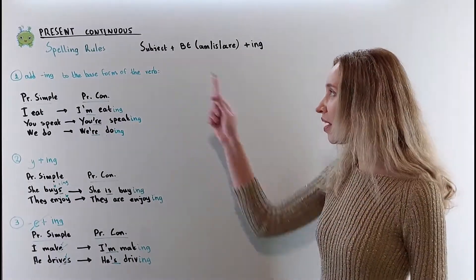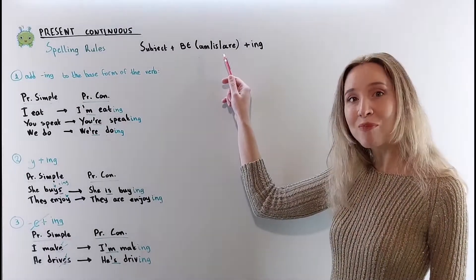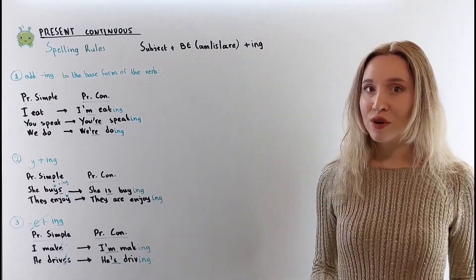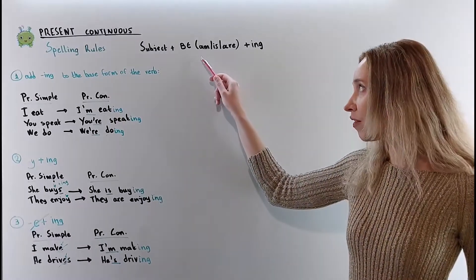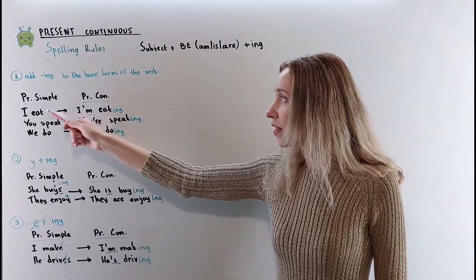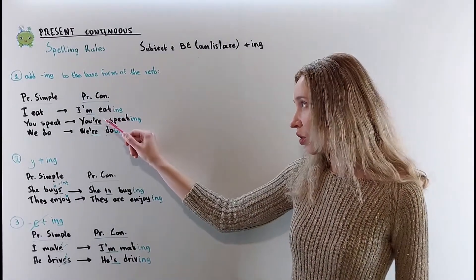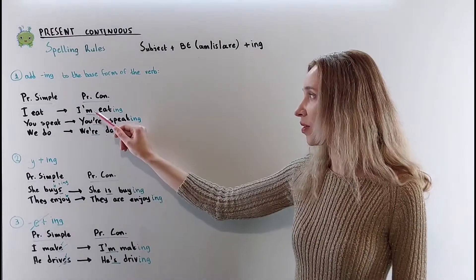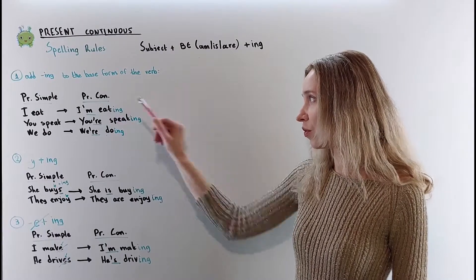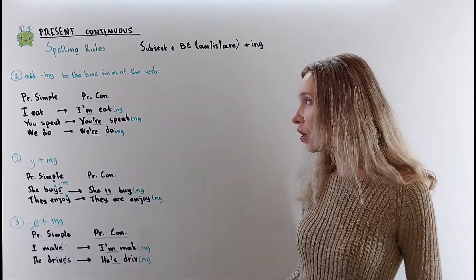Let's move to the spelling rules. The structure of this tense is: subject, the verb 'to be' in the present simple, and ING — so you add ING to the base form of the verb. Don't forget the auxiliary verb BE in the present simple. In the present simple: I eat. In the present continuous I'll have to change it, so I'll use the verb BE in the present simple: I am, and I'll add the ING to the base form: I am eating. You speak → you're speaking. We do → we're doing.